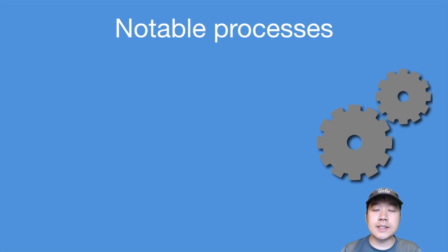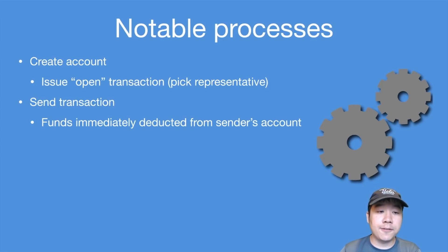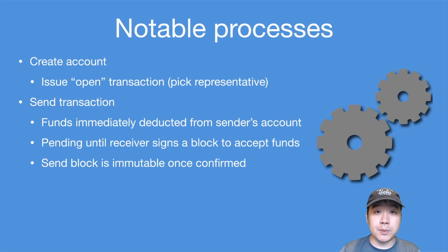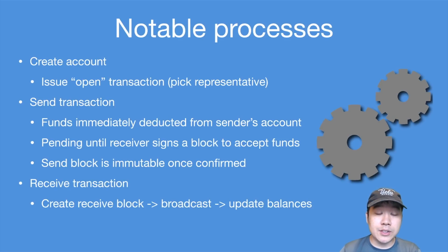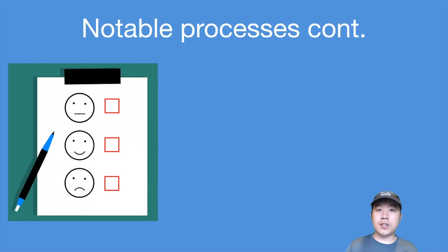Let's look at some notable processes. First, to create an account, you issue an open transaction, during which you must pick a representative. Second, when you issue a send transaction, funds are immediately deducted from the sender's account and remain pending until the receiver signs a block to accept the funds; the send block is immutable once confirmed. For receive transactions, you create a receive block, broadcast it to the network, and update your balances. Account balances are included in each block, which is interesting for pruning. Representatives are important because they can vote on your behalf, and you can issue a change transaction to switch your representative at any time. Importantly, representatives have no access to your funds — they simply vote for you in cases of forks.